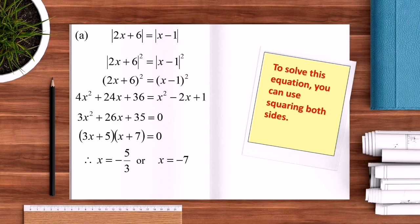For Question B: |4(x − 2)| = |x + 2|. Squaring both sides: 16(x − 2)² = (x + 2)². Expanding: 16x² − 64x + 64 = x² + 4x + 4. Simplifying: 15x² − 68x + 60 = 0. Factorizing: (3x − 10)(5x − 6) = 0, giving X = 10/3 or X = 6/5. That's all for today. Thank you, bye!